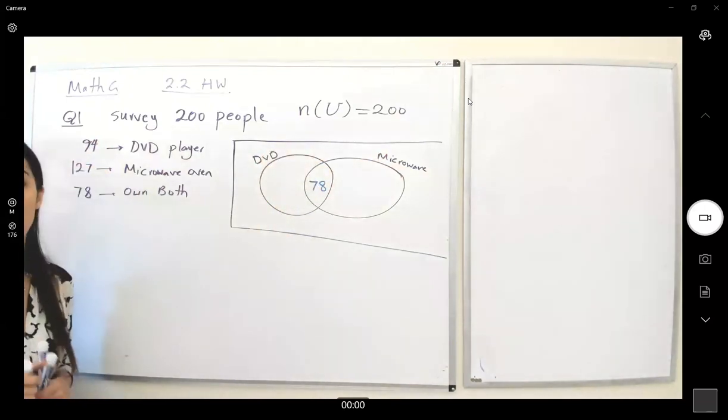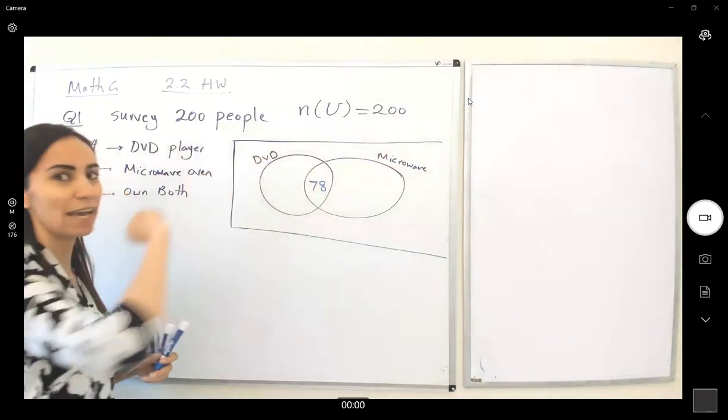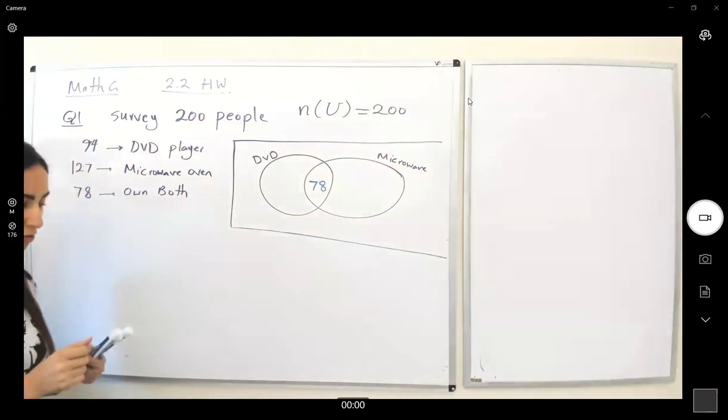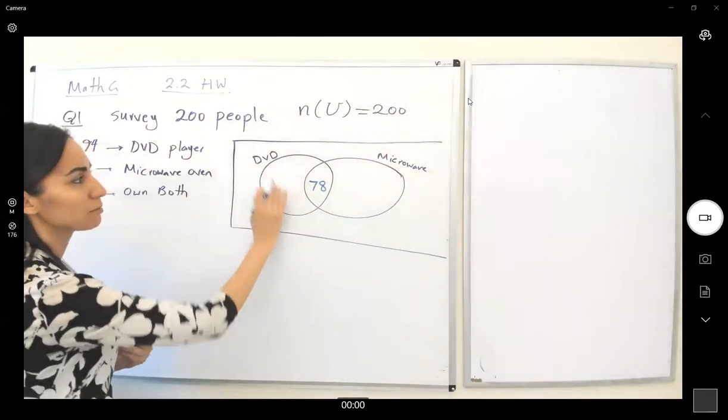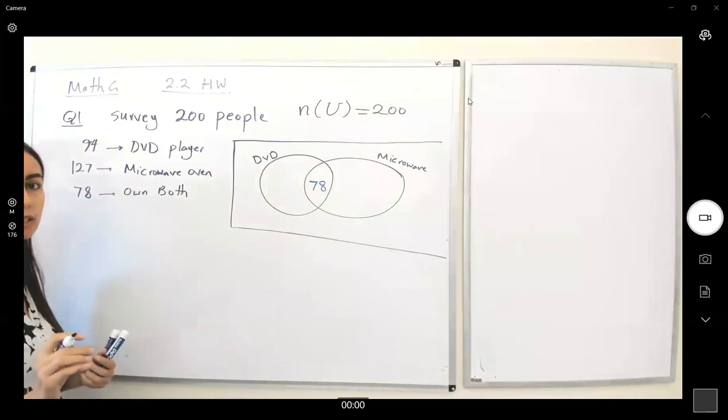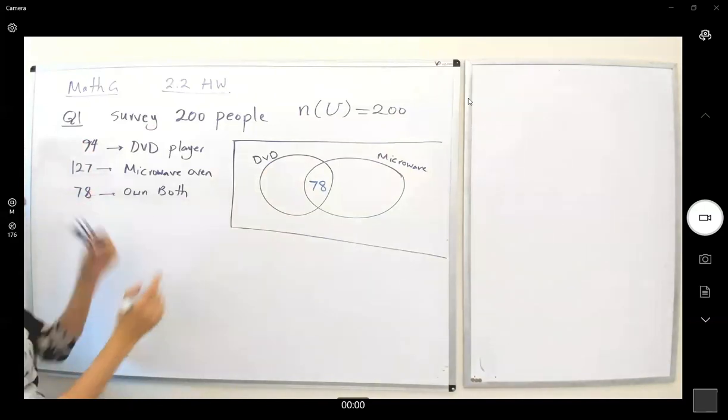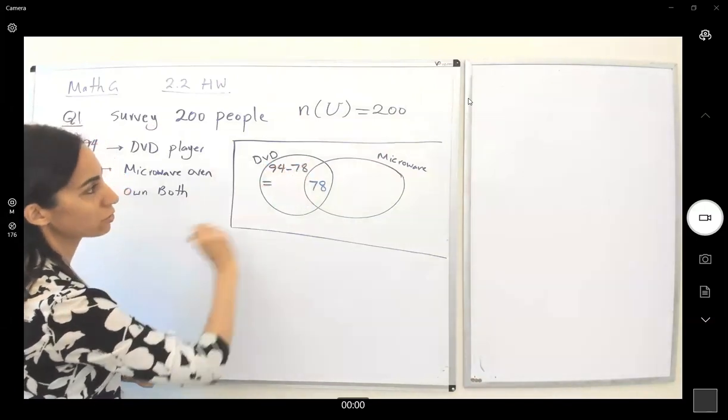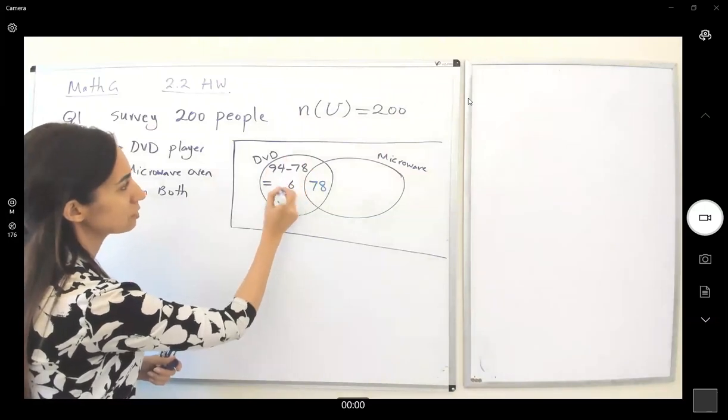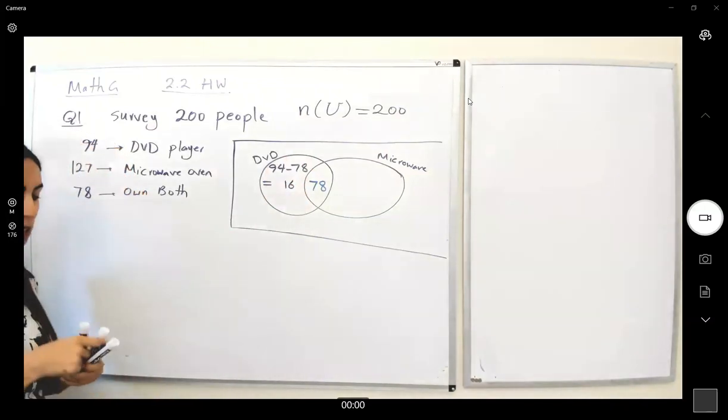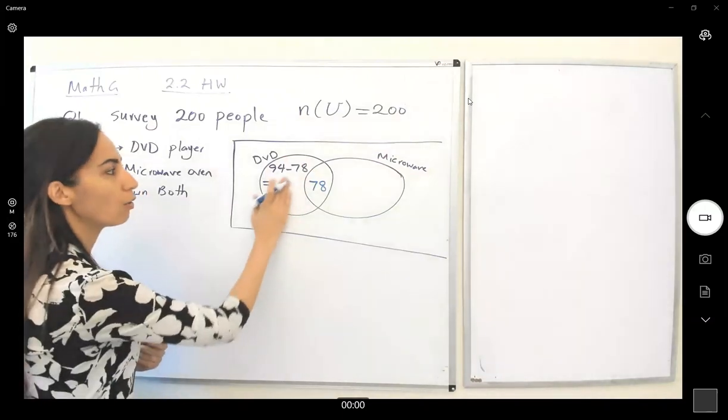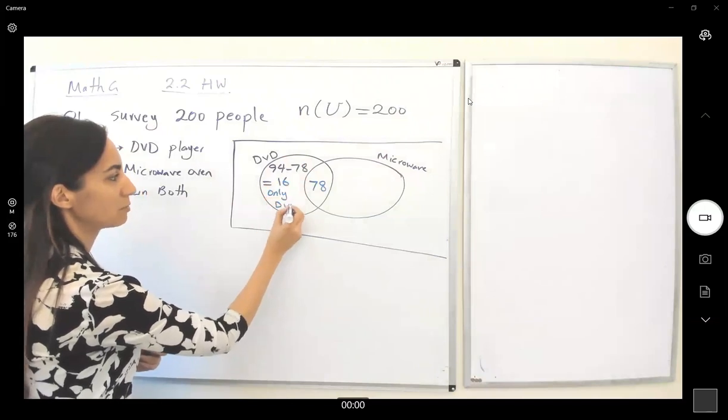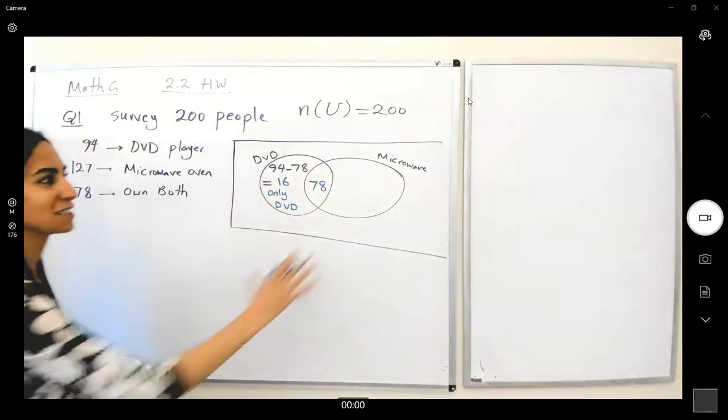So the cardinality of the first set is 94, and 78 of those 94 people also own a microwave oven. What's the meaning of that? It means that the number of people who only own DVD player is going to be 94 minus 78, which is equal to 16.